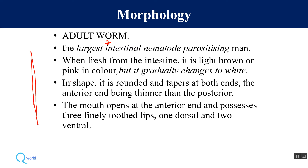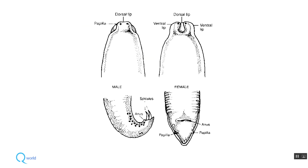The anterior end is thinner than the posterior end. The mouth opens at the anterior end and possesses three finely toothed lips — one dorsal and two ventral.